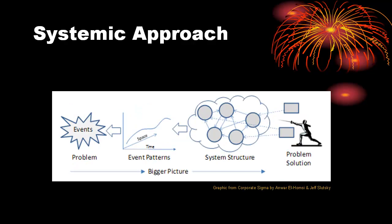A systemic perspective considers that events have associated patterns of behavior. These patterns of behavior are the result of interactions within an underlying structure. By identifying and understanding the underlying structure, approaches for altering the basis for the situation can be identified and implemented.